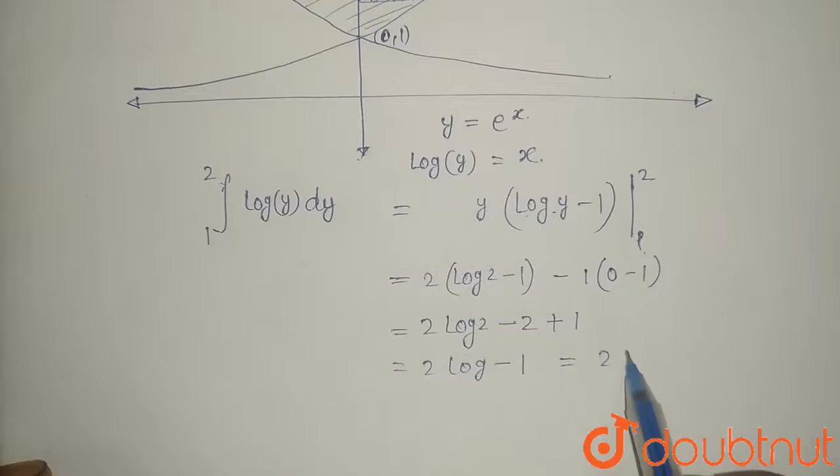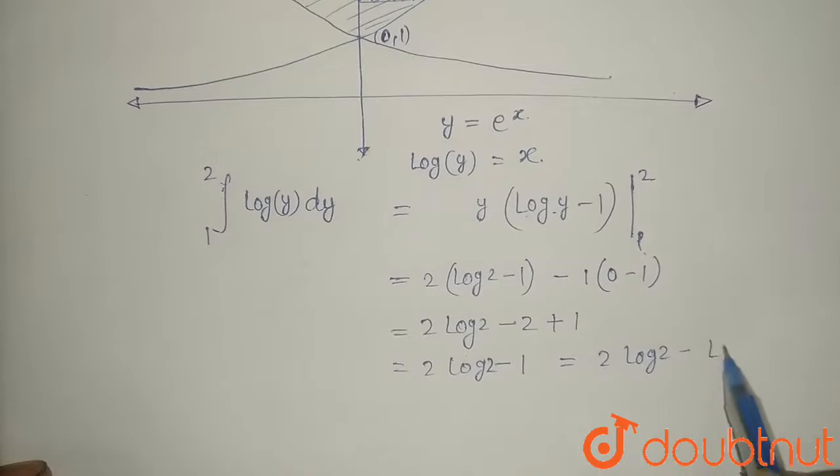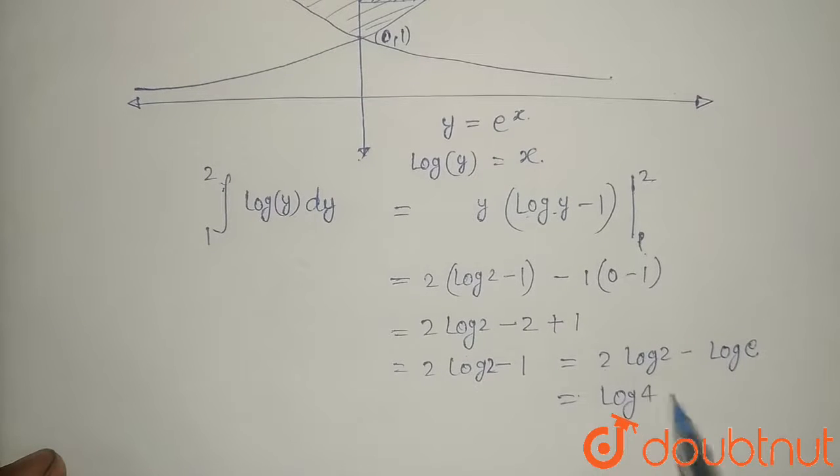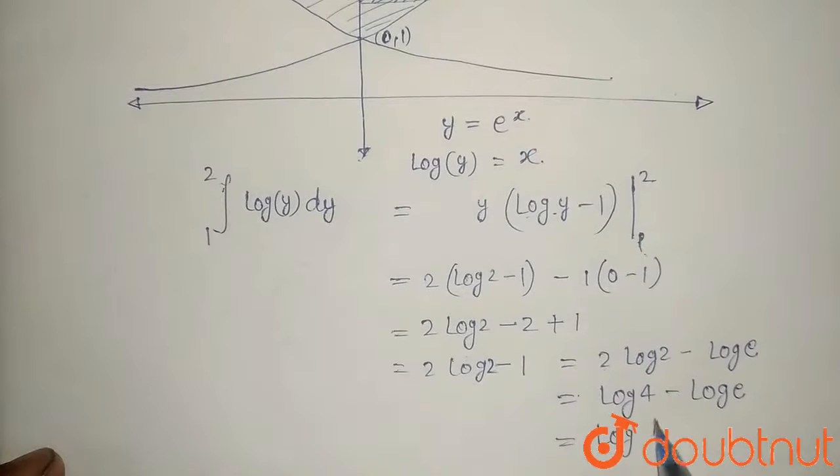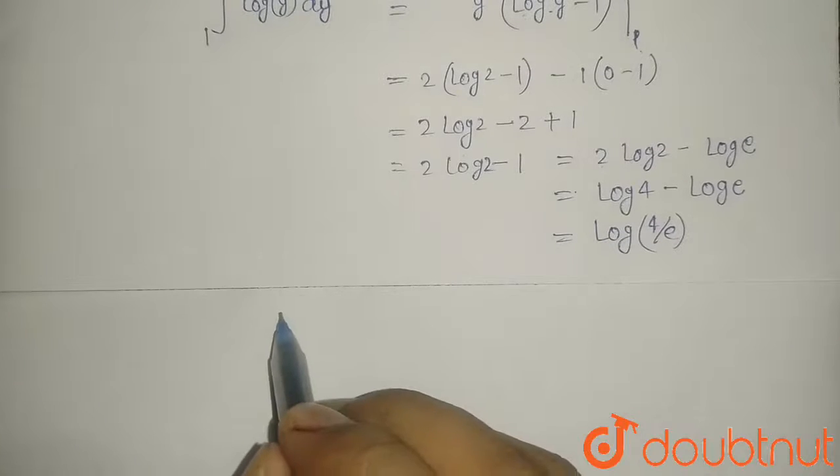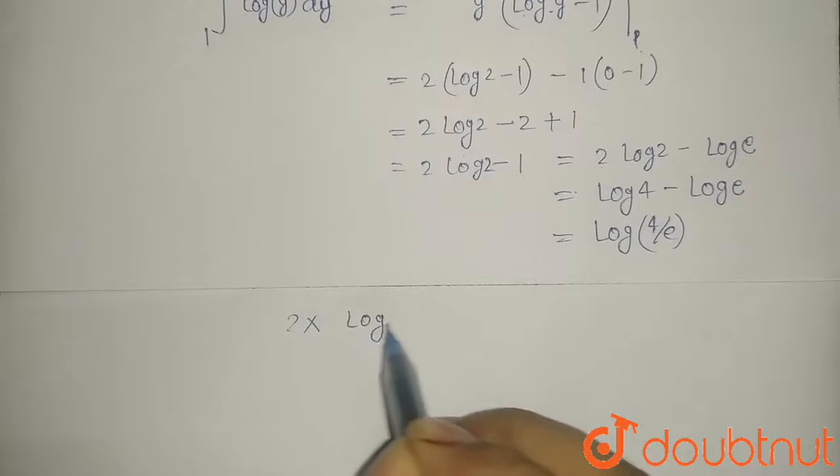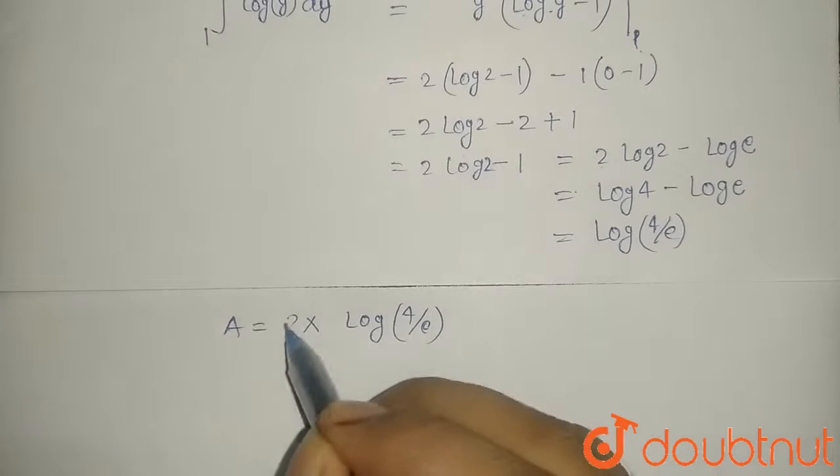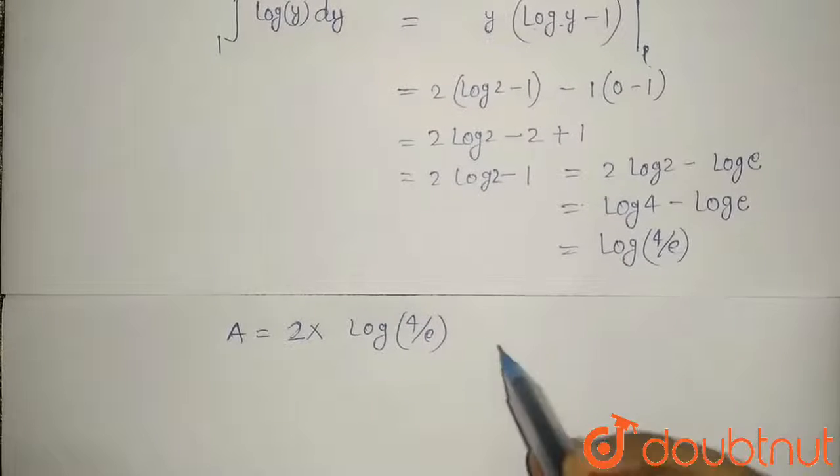1 can also be written as log e, so we have 2 log 2 minus log e. Now we can use logarithmic property and take 2 inside, that will give us log 4 minus log e, which equals log 4 by e. So our total shaded area will be 2 times log 4 by e.